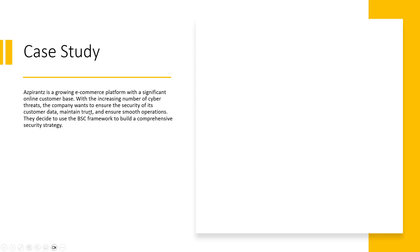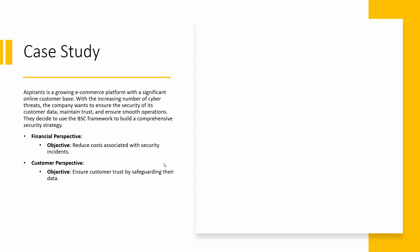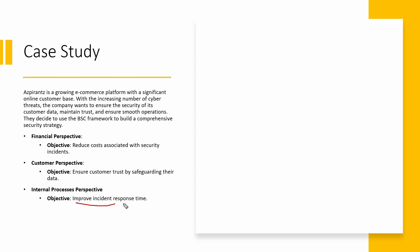Let's look at a case study. Aspirants is a growing e-commerce platform with a significant online customer base. With an increasing number of cyber threats, the company wants to ensure the security of its customer data, maintain trust, and ensure smooth operations. They decide to use the Balanced Scorecard framework to build a comprehensive security strategy. From a financial perspective, the objective is to reduce the cost associated with security incidents. From the customer perspective, ensure customer trust by safeguarding their data. From the internal perspective, improve incident response time. By improving this particular process, we can achieve the financial perspective of reducing cost, and we can also gain customer trust.